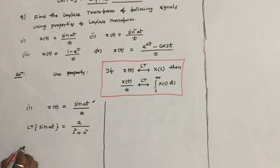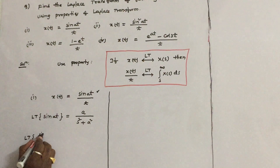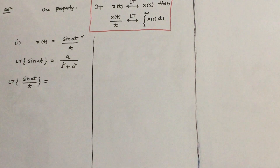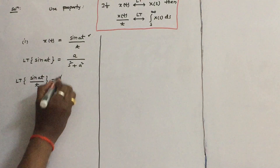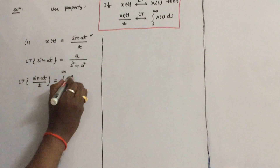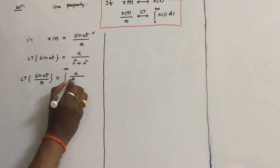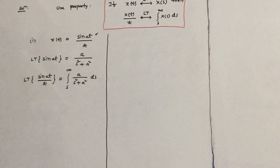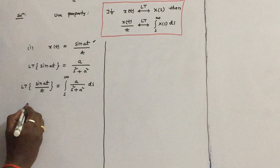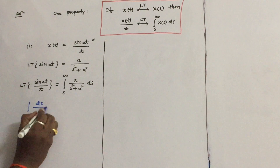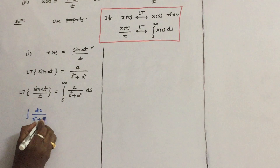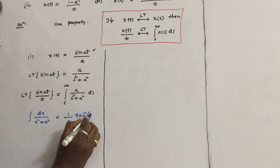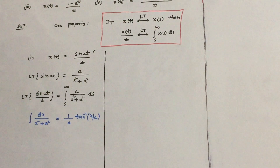Since sin(At) is divided by T, the Laplace transform is equal to the integral from S to infinity of A by (S² + A²) dS. Use this formula to solve this integral: integral of dx by (x² + A²) equals 1/A times tan inverse of x/A.